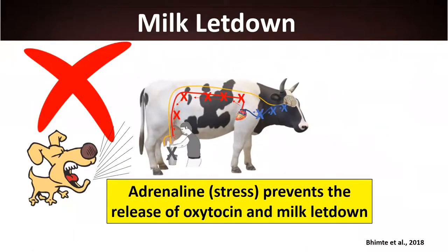If the cow is stressed due to an aversive handler, adrenaline is released, and this hormone prevents the release of oxytocin from the neurohypophysis, thereby impeding milk letdown.